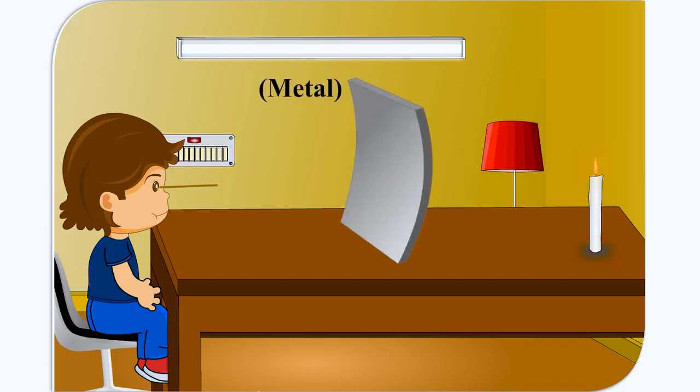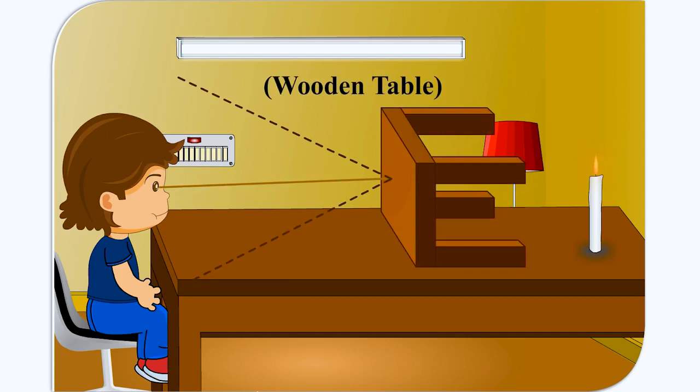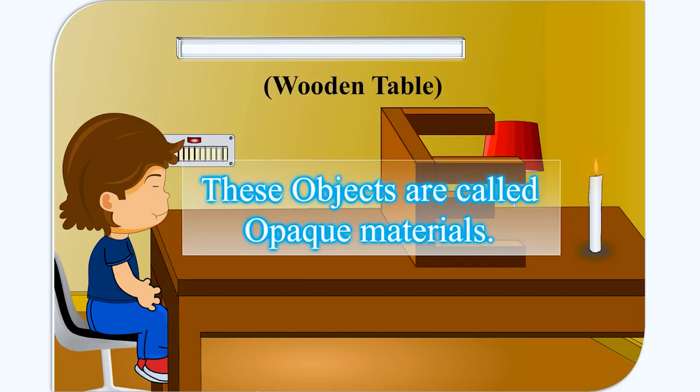Objects like metals, wooden tables, bricked wall do not allow any light to pass through them. We cannot see anything through them. They are called opaque materials.